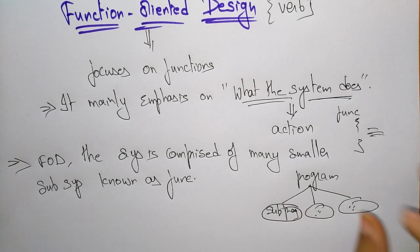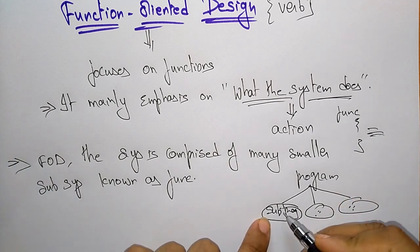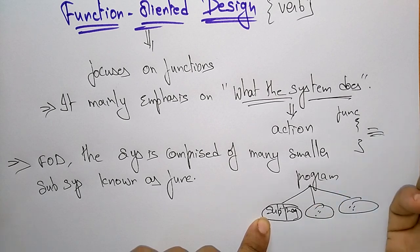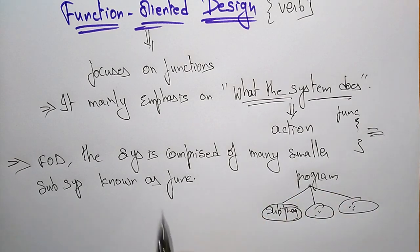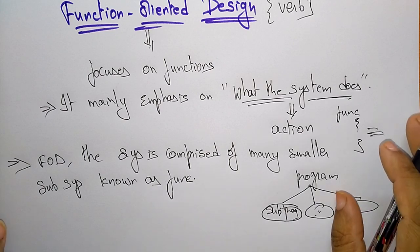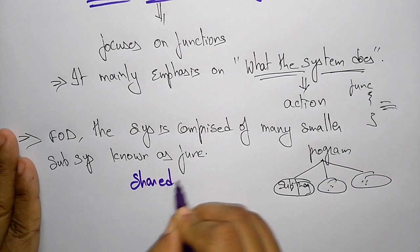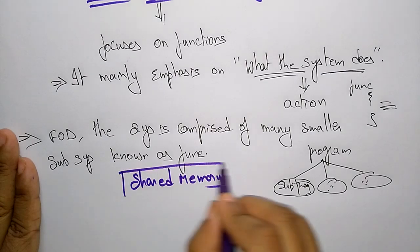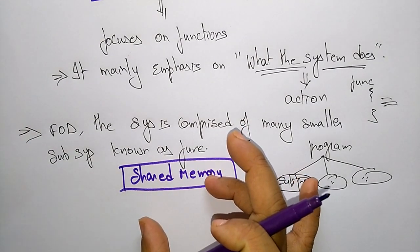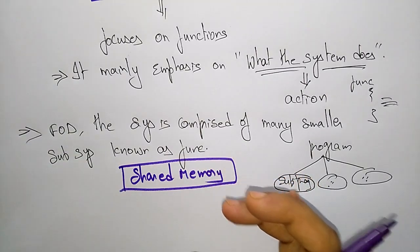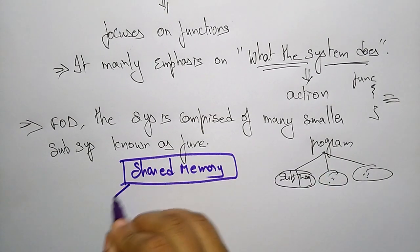These function modules — another name for a function is a module — these function modules can share information among themselves by means of information passing and using information available globally. In the diagram, there is a shared memory. That shared memory is represented globally, so any function in any program can access that global data. That's why we call it shared memory.